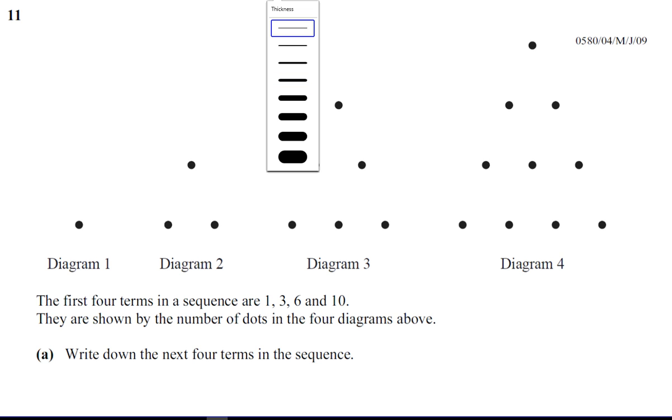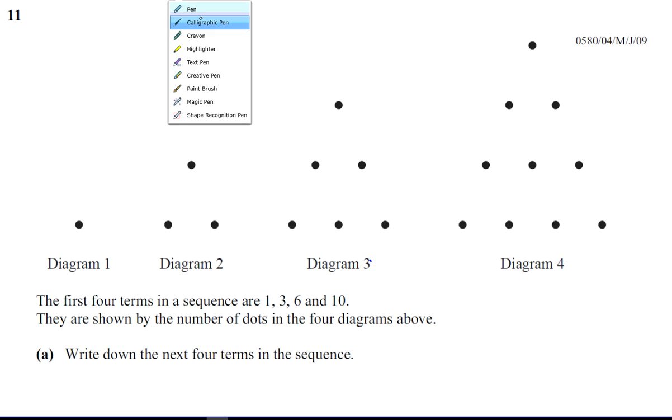The pattern of these dots are given as 1, 3, 6, and 10 - actually called the triangle numbers. So we have 1, 3, 6, and 10 as those dots. That's 1, 3, 6, and 10. Write down the next four terms of the sequence.